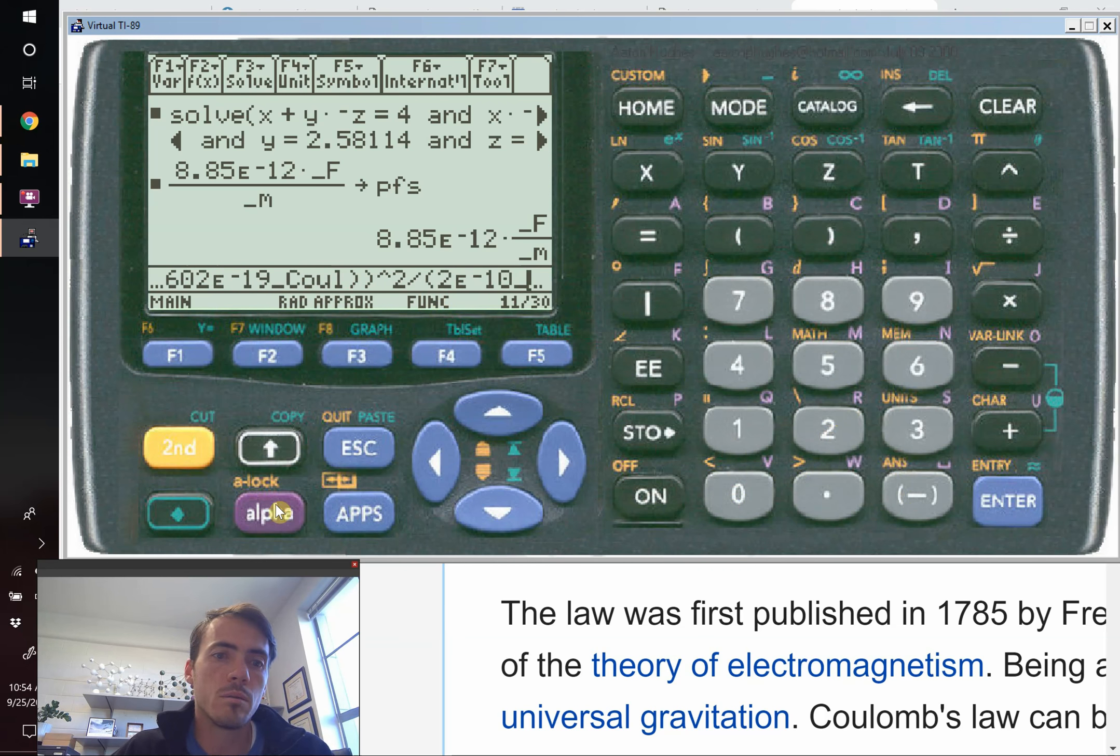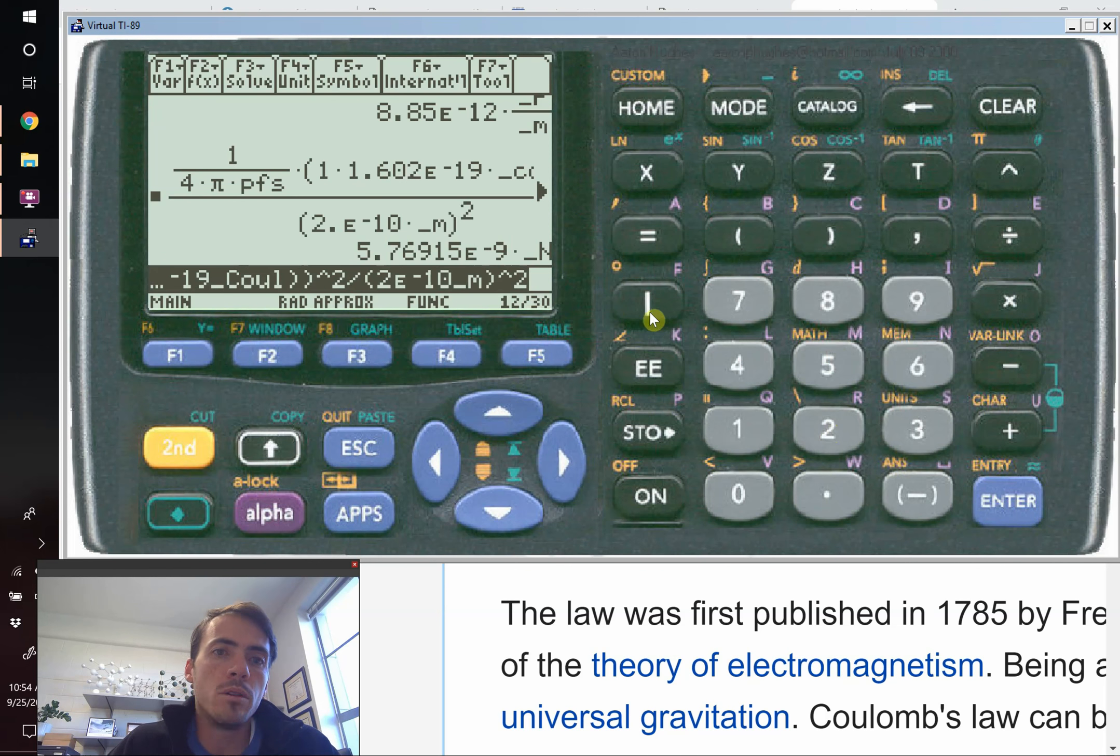And then we need to remember that this is also squared. So we're going to square that. And when we hit enter, out pops Newton. So even though this was a complicated expression, you had farads per meter, you had coulombs squared up here, you had meters squared here. Out comes your correct answer with the correct units.